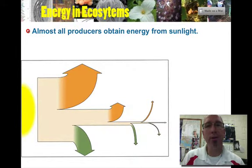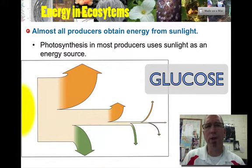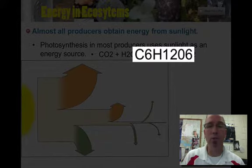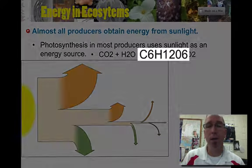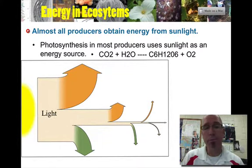Almost all producers have to get their energy from sunlight, and that's where we're going to spend our time talking about. Photosynthetic organisms take carbon dioxide and water and make C6H12O6 — which is glucose — and then give off oxygen. So they take light energy and turn it into chemical energy.